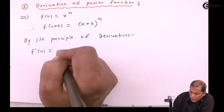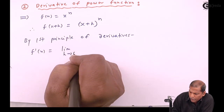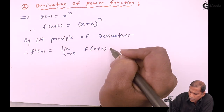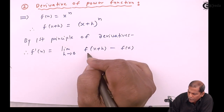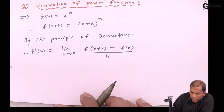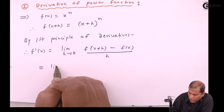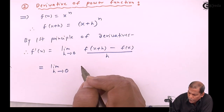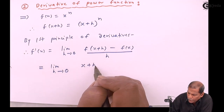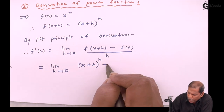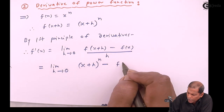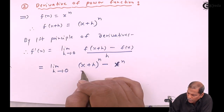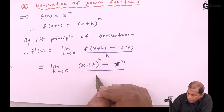f'(x) is equal to the limit as h tends to zero of [f(x+h) minus f(x)] divided by h. So that equals the limit as h tends to zero of [(x+h)ⁿ minus xⁿ] upon h.